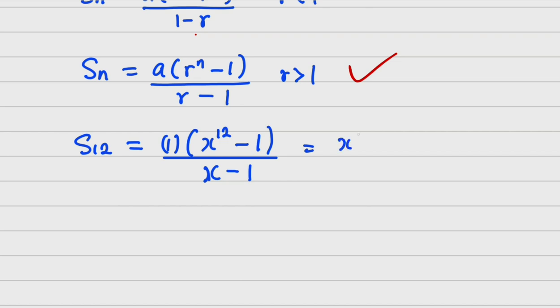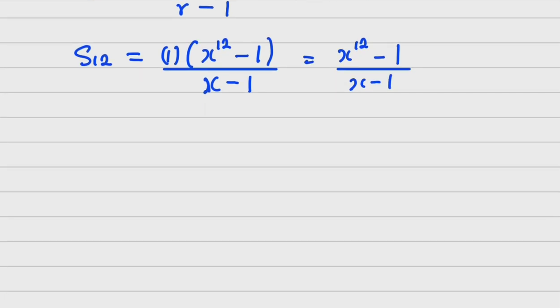Now this can be written as X raised to the power 12 minus 1 all over X minus 1. Separating it, which I will tell you why I am separating it. I am going to have X raised to the power 12 all over X minus 1 then minus 1 all over X minus 1.